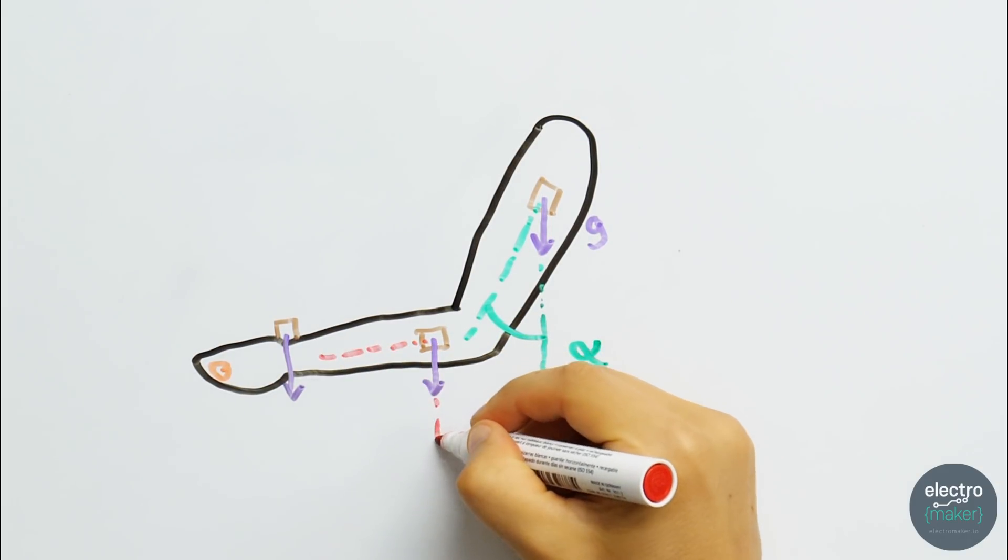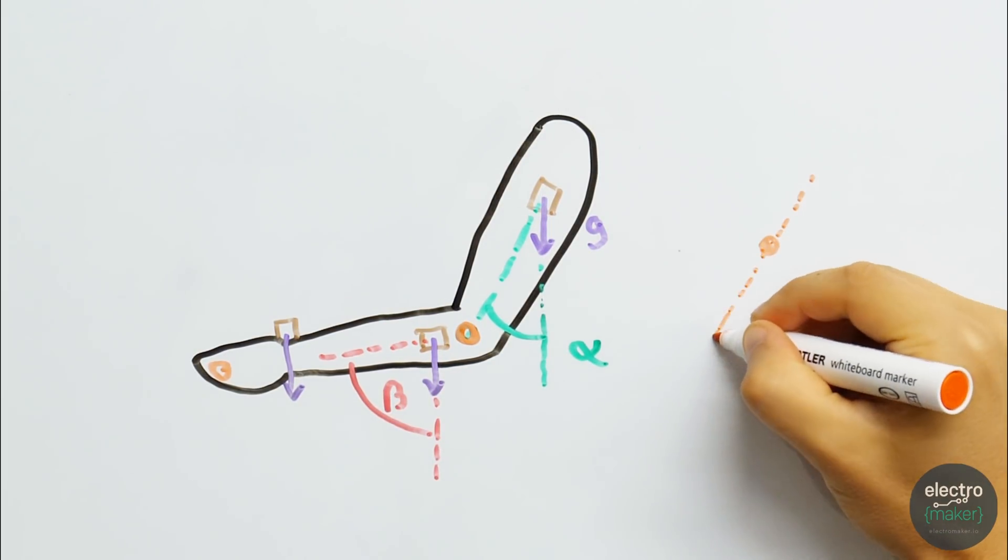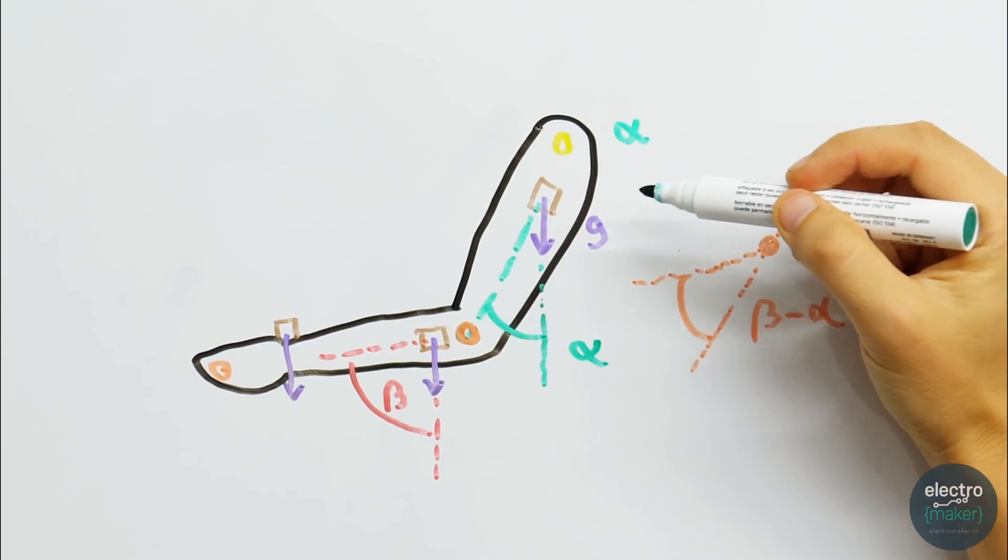Since the joints are relative to the ones up the kinematic chain we have to calculate the relative angles. The relative elbow pitch is easily calculated by subtracting the shoulder pitch. The shoulder is the first joint here so we can simply take the measured value.